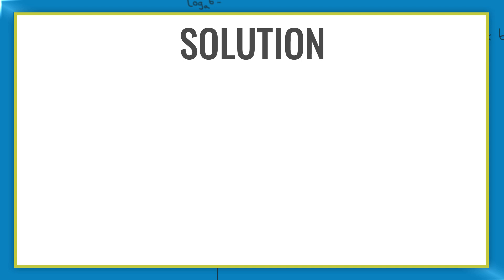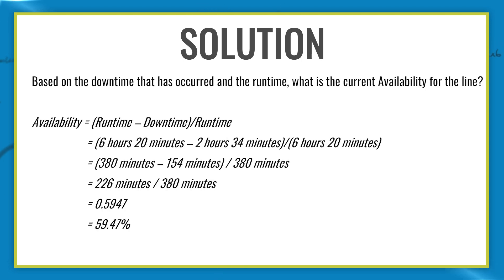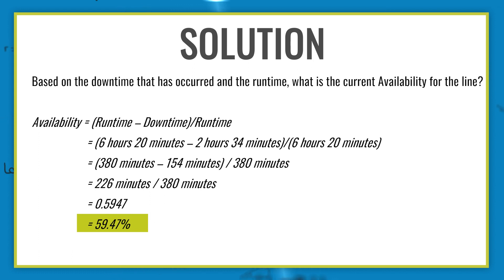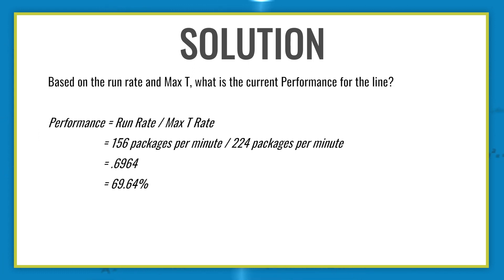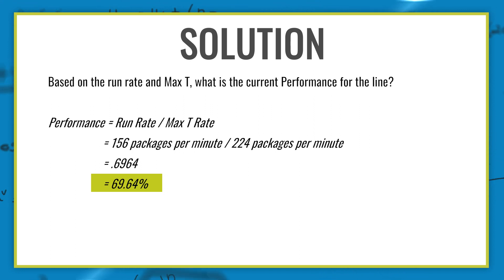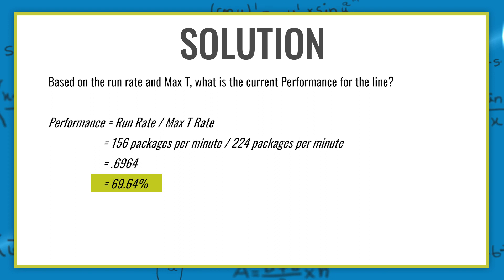If you calculated 59.47% availability, you're correct. This means that the line was running about 60% of the time. The performance of the line is calculated at 69.64%, which is not ideal. We would like performance to be around 95 to 100%.